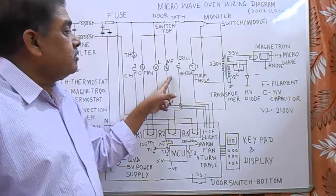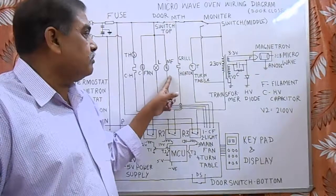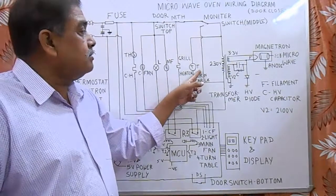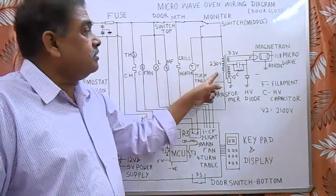This is the main magnetron cooling fan. This is the grill heater. This is the turntable motor.